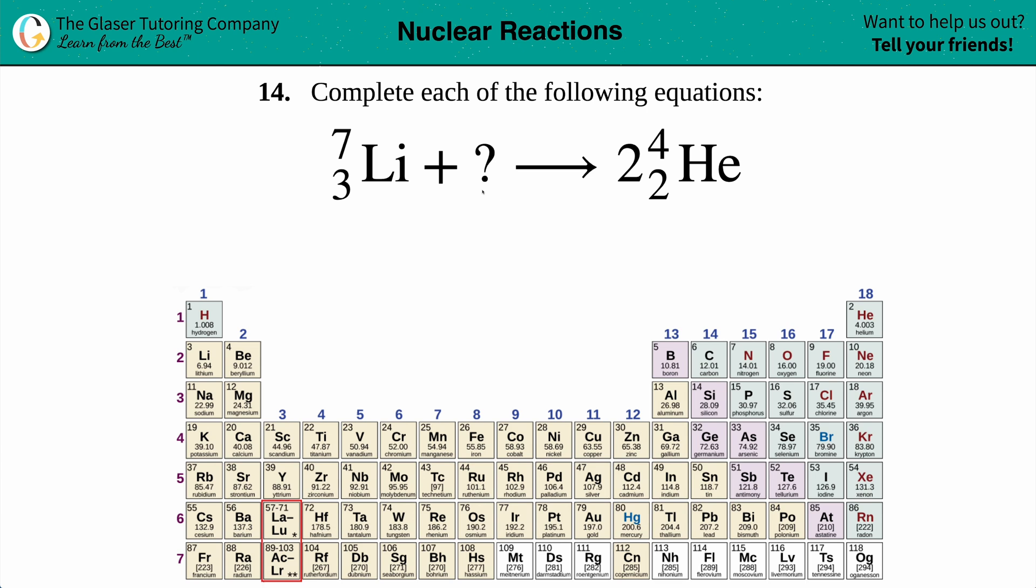We have this nuclear reaction where we have lithium with an atomic mass of seven, atomic number of three, plus something which will yield us two helium fours. Four on the top, two on the bottom.